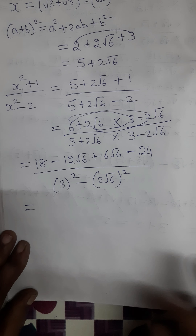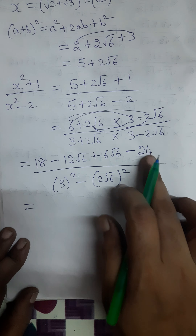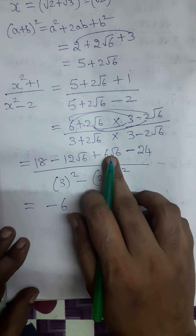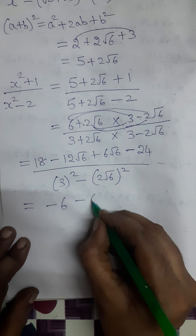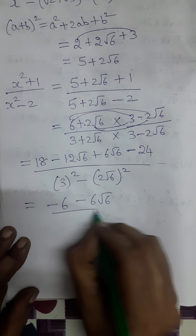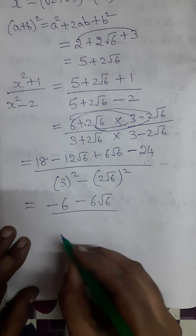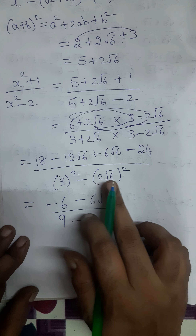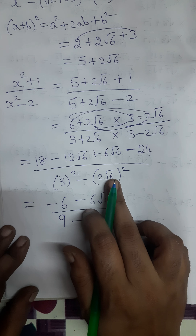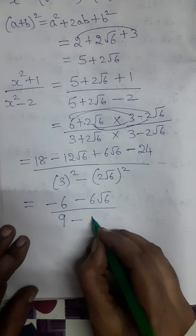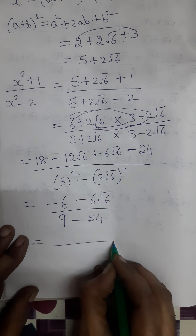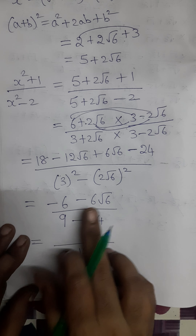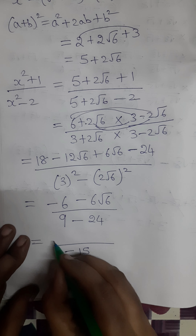Simplifying the numerator: 18 minus 24 gives minus 6, and minus 12√6 plus 6√6 gives minus 6√6. In the denominator: 3² is 9, and (2√6)² is 4·6 = 24. So the denominator is 9 minus 24, which gives minus 15.